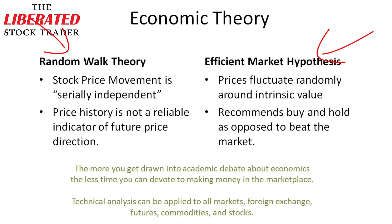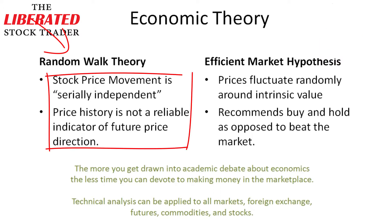These two theories are banded around mostly by academics. If we look at random walk theory, the two tenets are that stock price movement is serially independent. They assert that the price of a stock is random — it essentially moves around with no basis and no relation to its historical price.